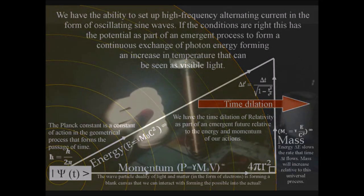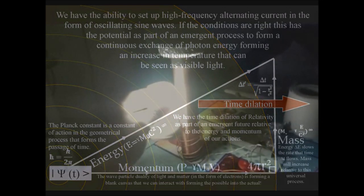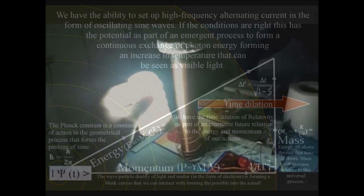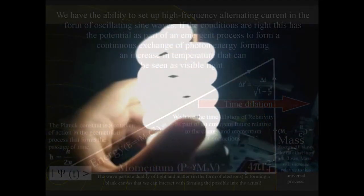this has the potential as part of an emergent process to form a continuous exchange of photon energy, forming an increase in temperature that can be seen as visible light.